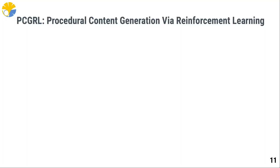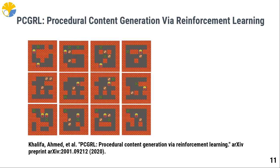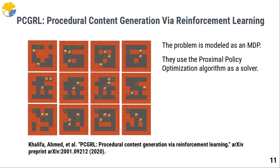Now let's see an example of an RL-based application. This is the title of a paper that uses reinforcement learning but is not interactive — it's completely automatic. The title is PCGRL: procedural content generation via reinforcement learning. In this paper, an agent is presented that learns how to build game levels for different games such as Sokoban and Zelda. The problem is modeled as an MDP and they use a proximal policy optimization algorithm as a solver.